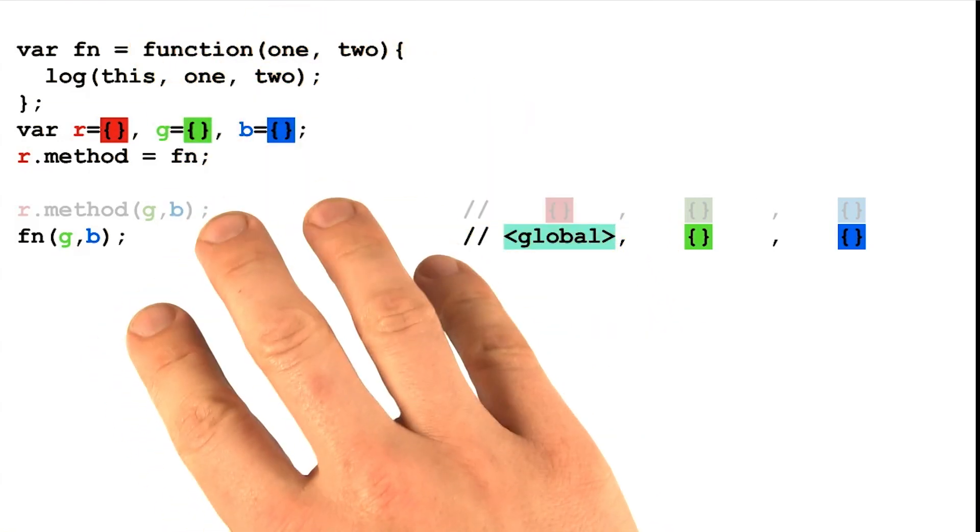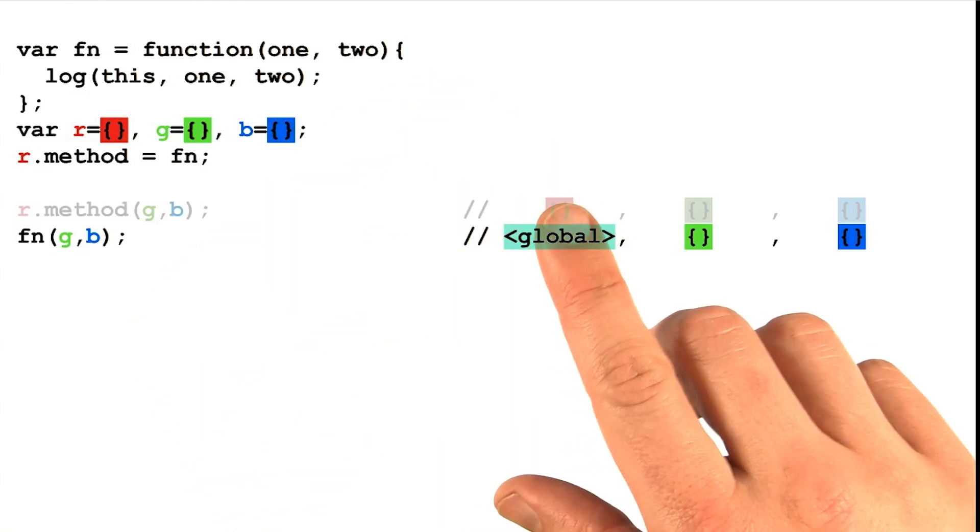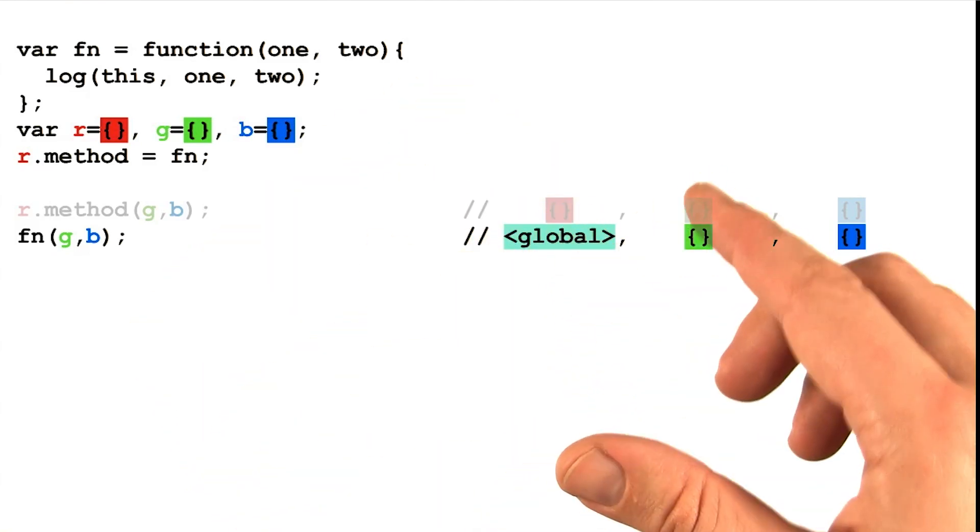Besides the left of the dot rule that we just described, there's actually another way for you to specify the value that you'd like the parameter this to get bound to.